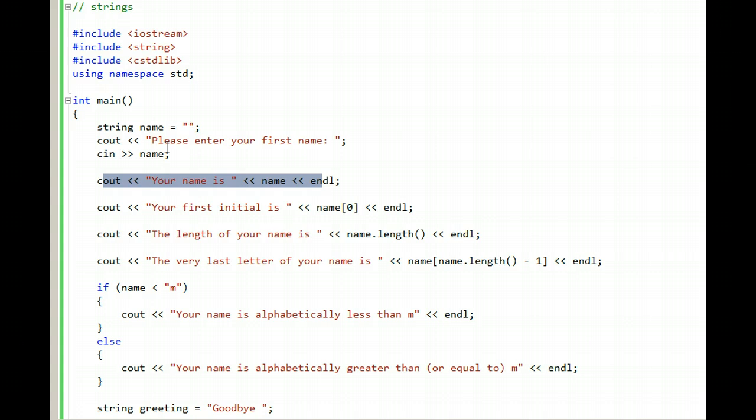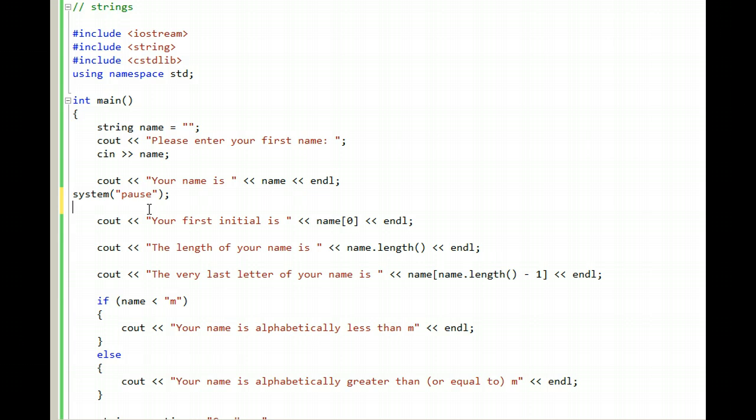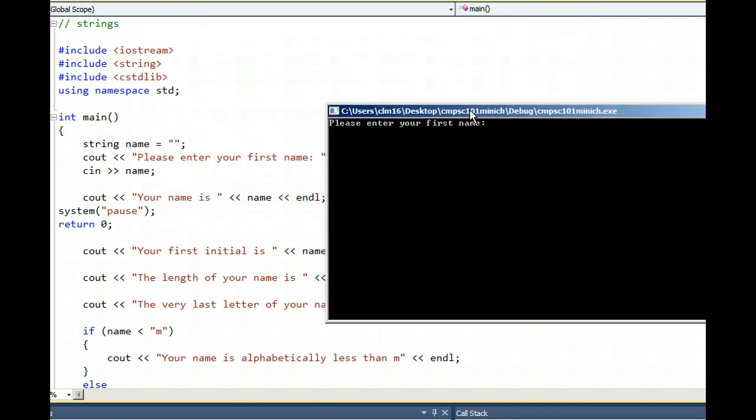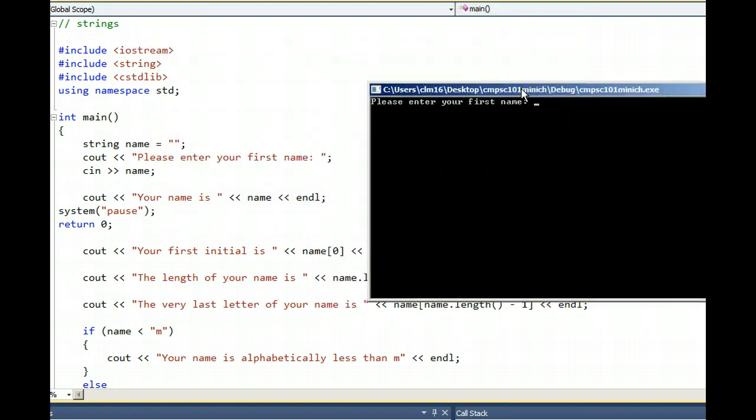Just like integer variables such as numbooks, we can type input with cin and we can print output with cout. Let's run the program up to that point to confirm that it works. The program allows me to input my first name and it prints out the first name.